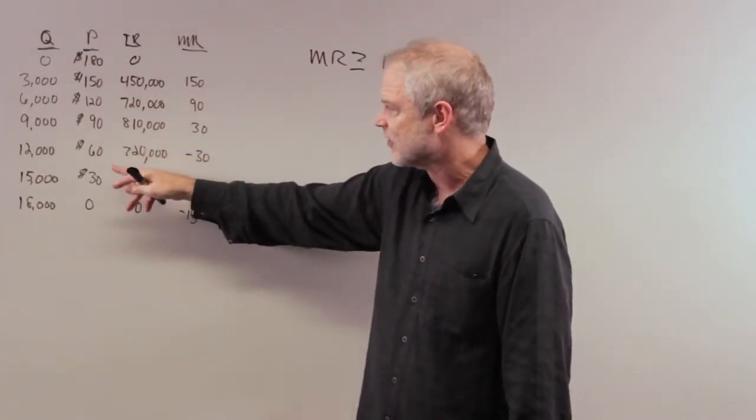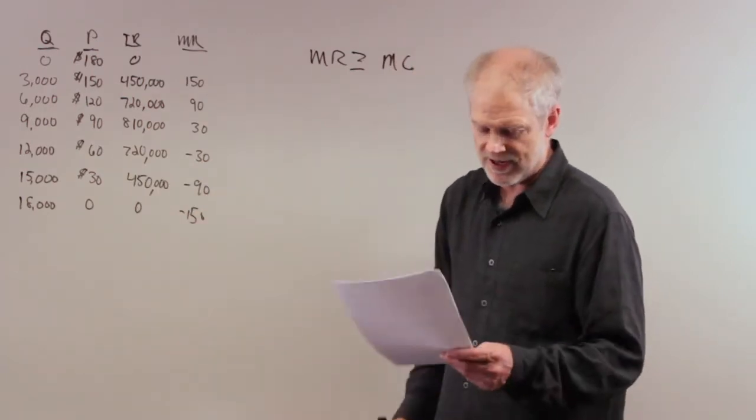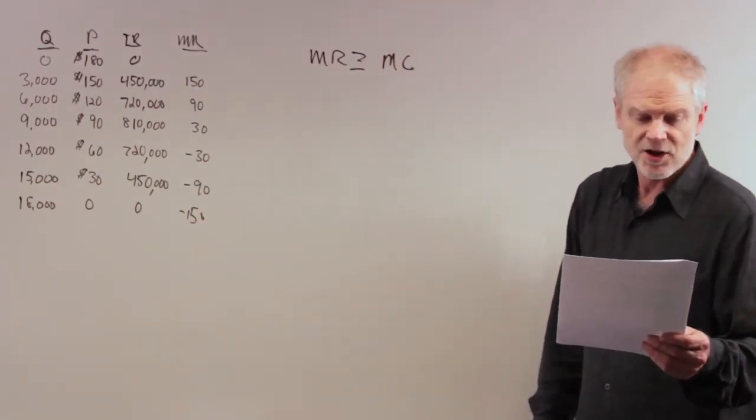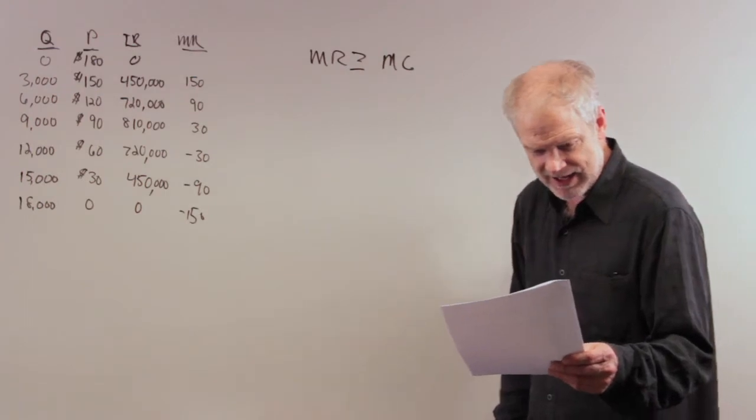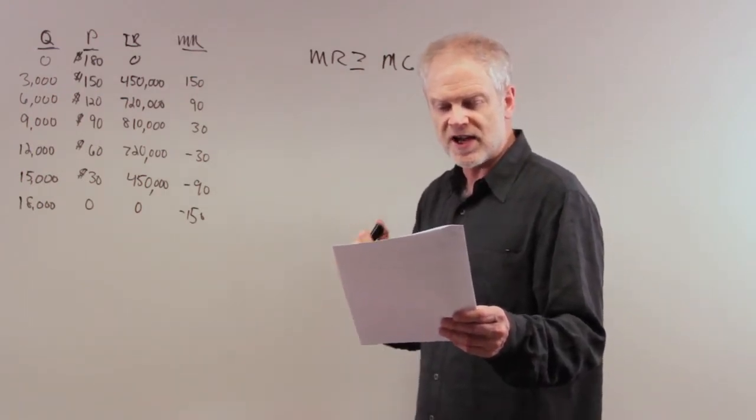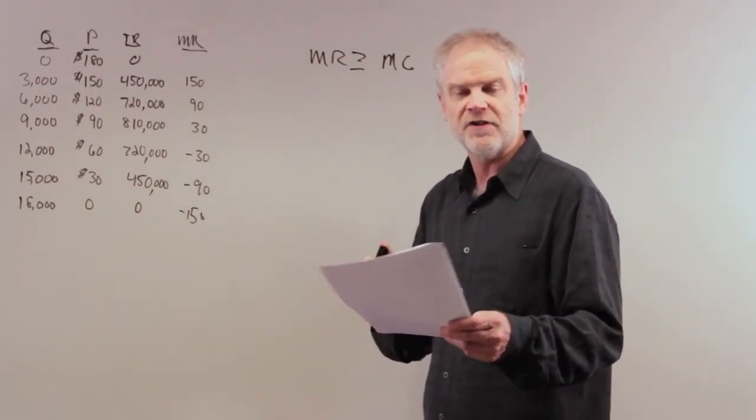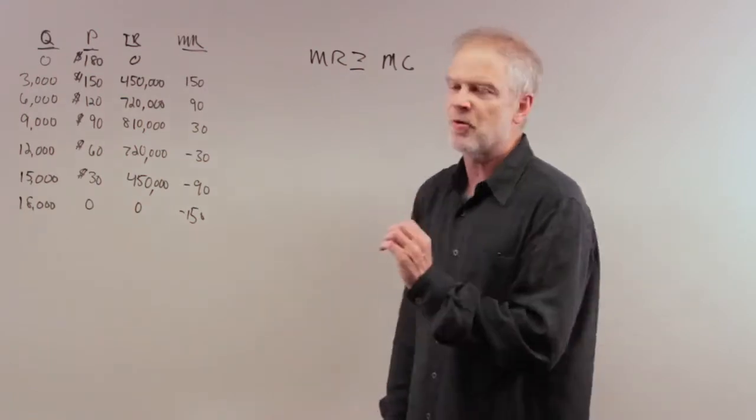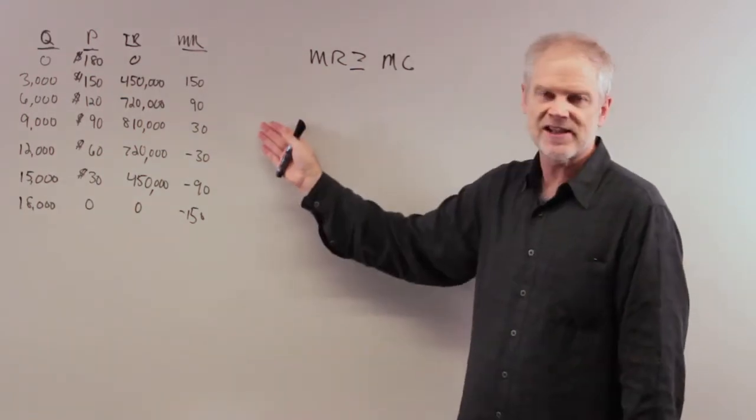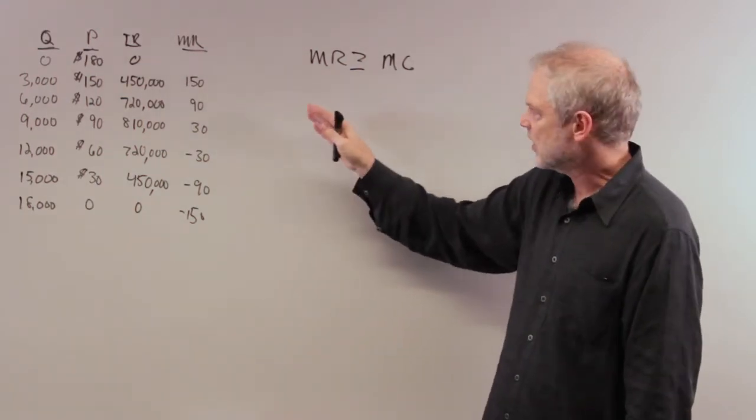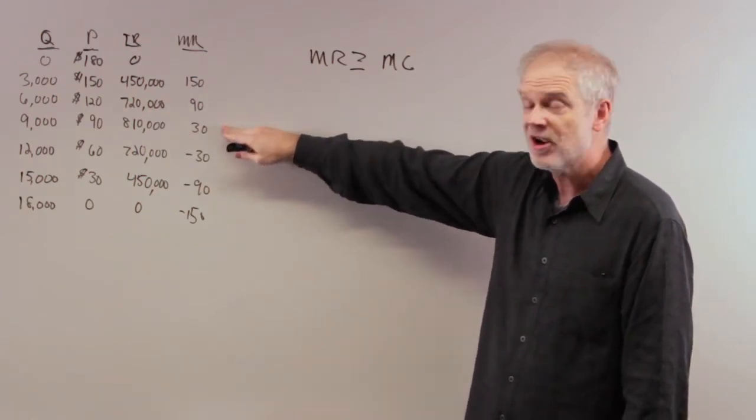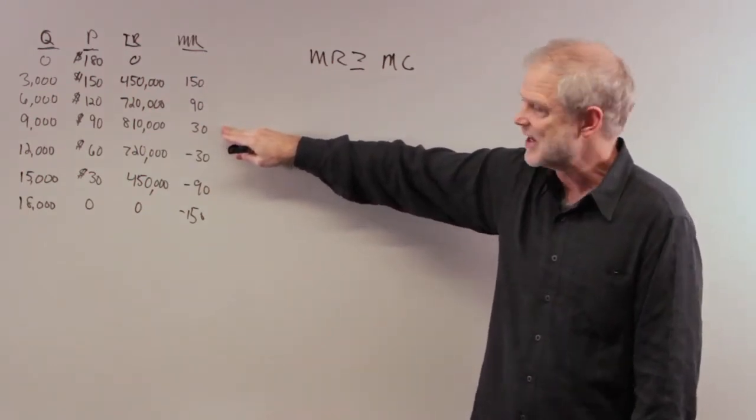Each gets half the revenue, which is $405,000. Subtracting the $200,000 fixed cost gives them profits of $205,000. The answer: each firm will charge $90 and sell 4,500 subscriptions. The point is they act just like a monopolist. The only difference is they share the subscriptions and customers.